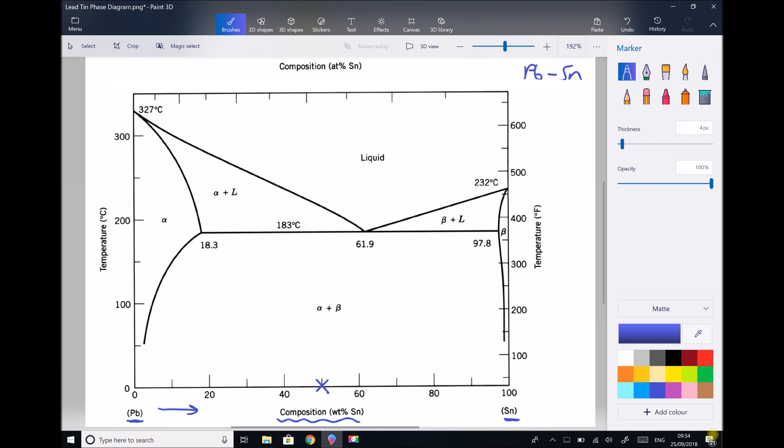On the y-axis on the left hand side we have the temperature in degrees C. We see temperatures ranging from 0 up to around 350 degrees on this axis. So what we're looking at in effect is changes that occur in alloys of lead and tin at different temperatures and different compositions.